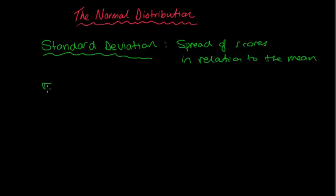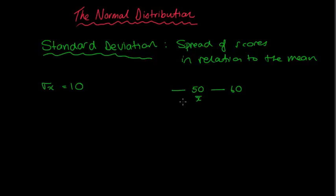Standard deviation is often denoted by a little sigma with a little cap on it. So, for example, if I have a big standard deviation — let's say a standard deviation of 10 — it means the scores are more spread out. For example, if we have a mean of 50 and a standard deviation of 10, either side of that mean would be 60 and 40, then 70 and 30. So you can see that the scores are spread out that way.